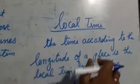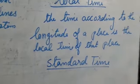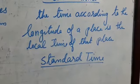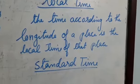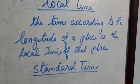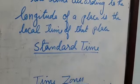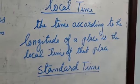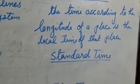The next topic is local time. The time according to the longitude of a place is the local time of that place. All the places on the same meridian will have the same local time. The places situated east or west of that meridian will have different local times. The local time of any place can be calculated provided we know the longitude of the place and the local time and longitude of another place.